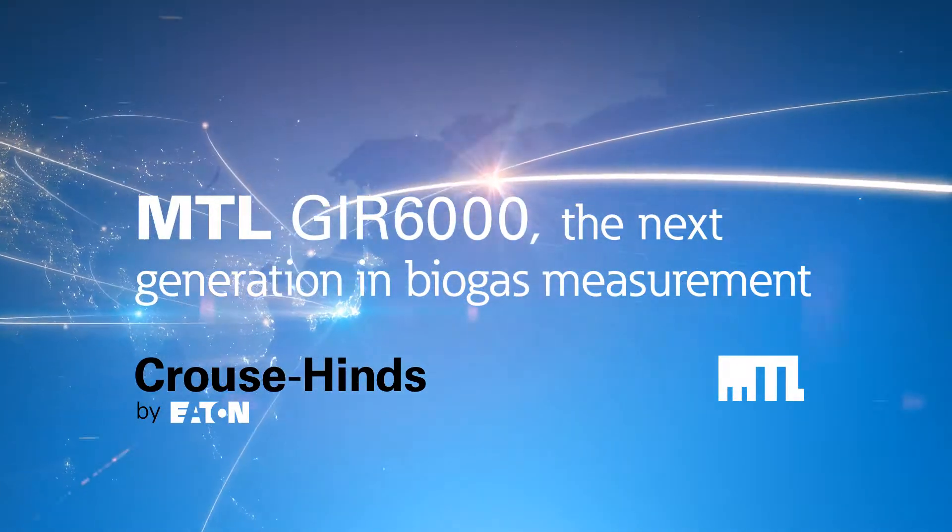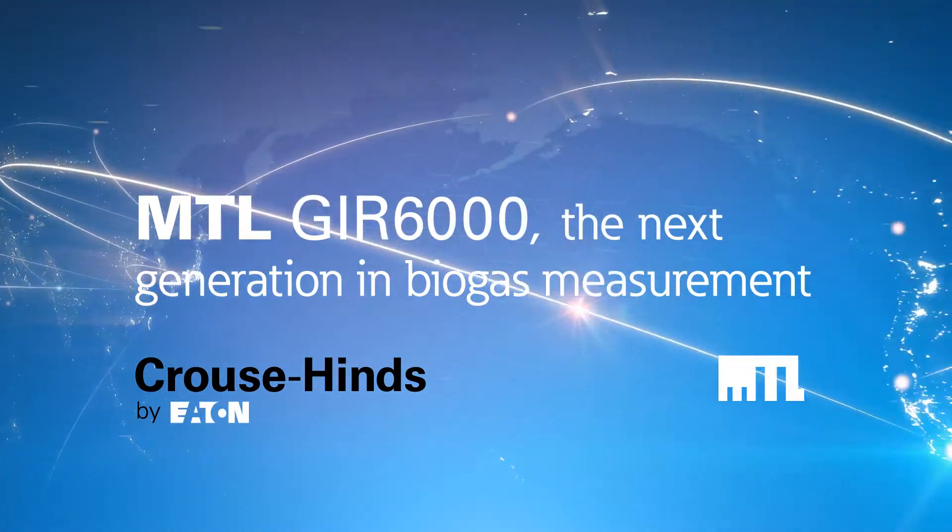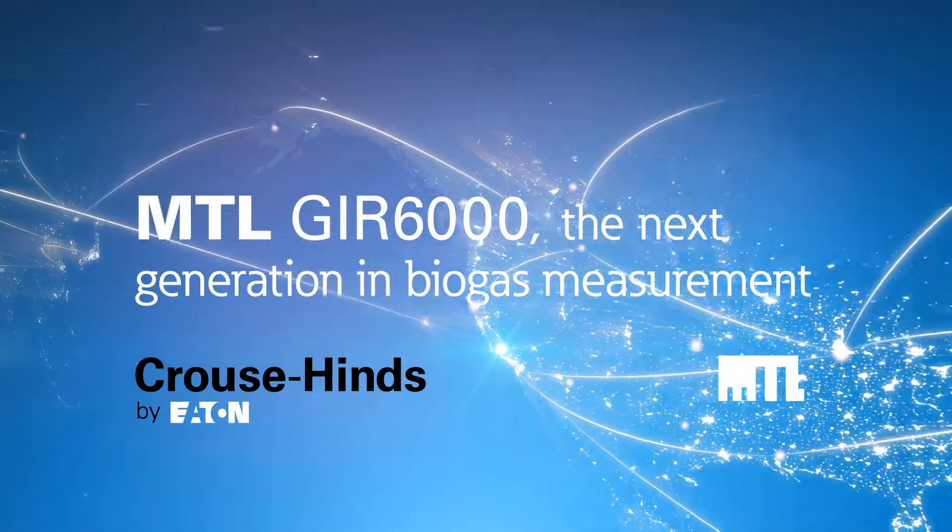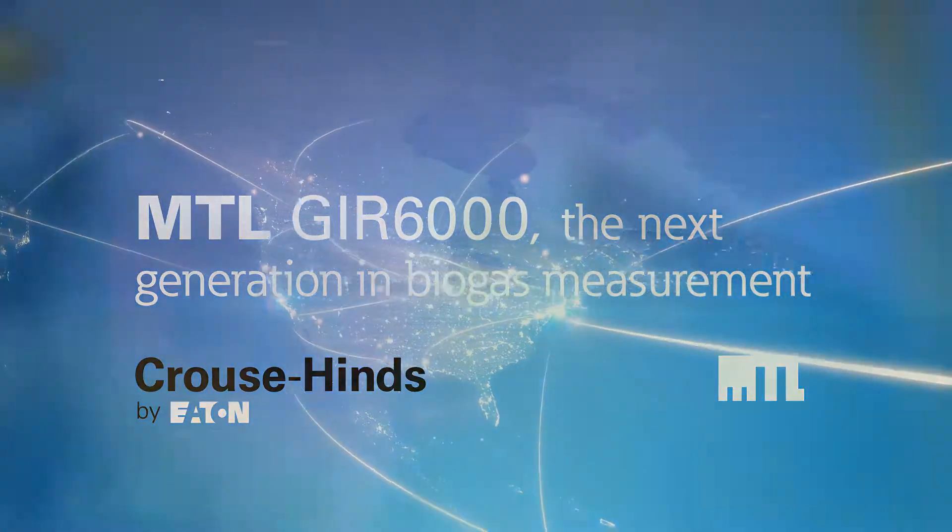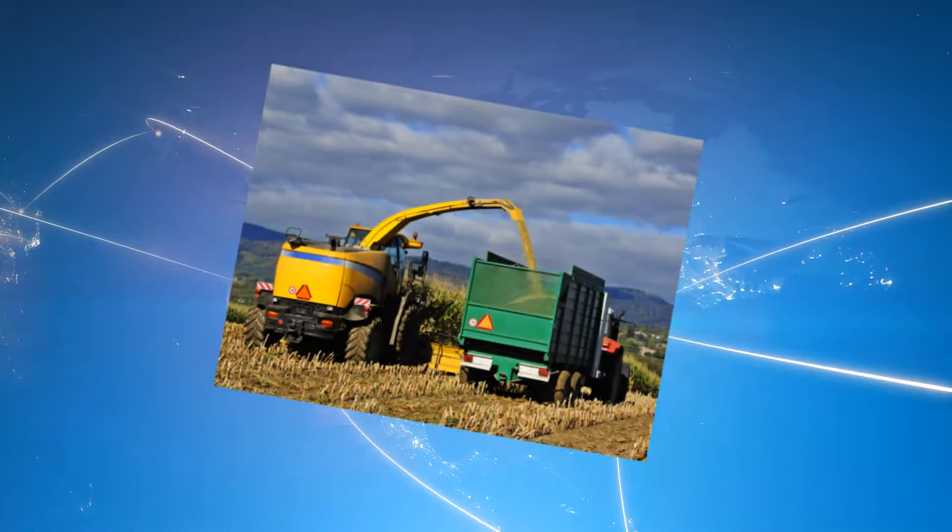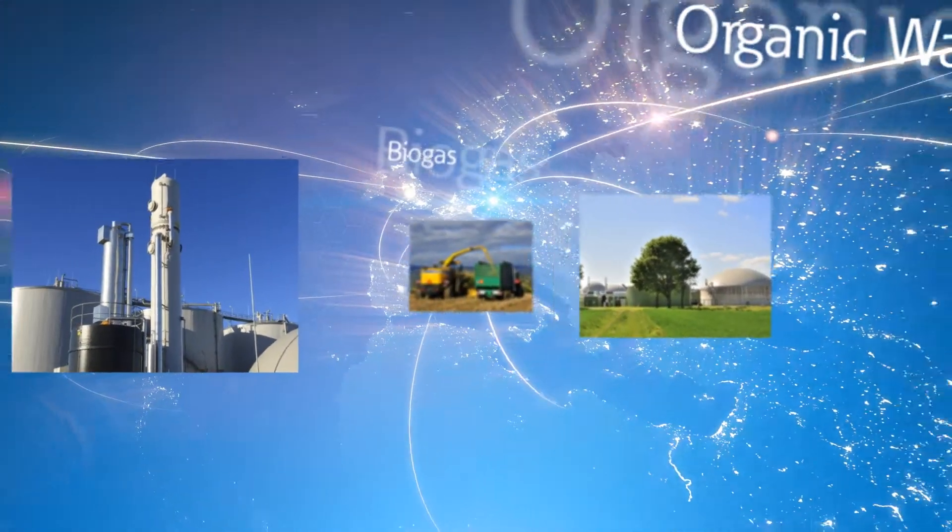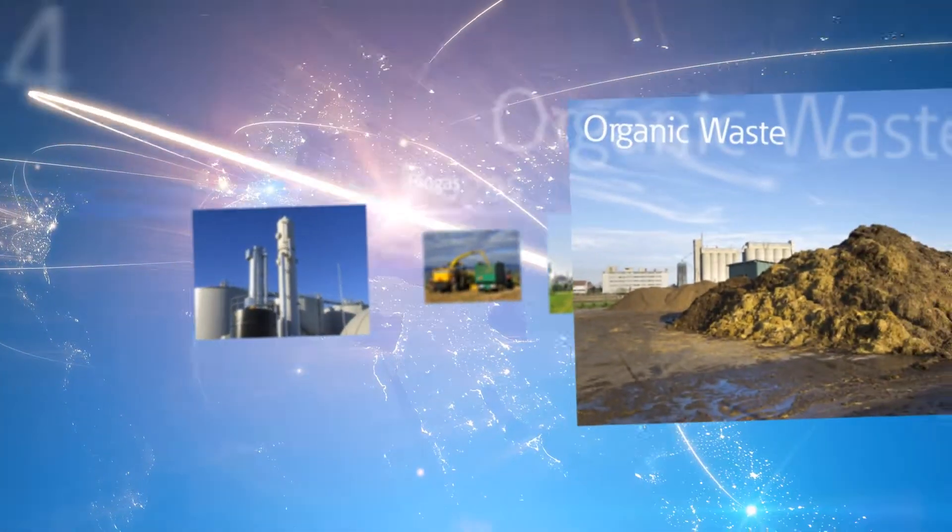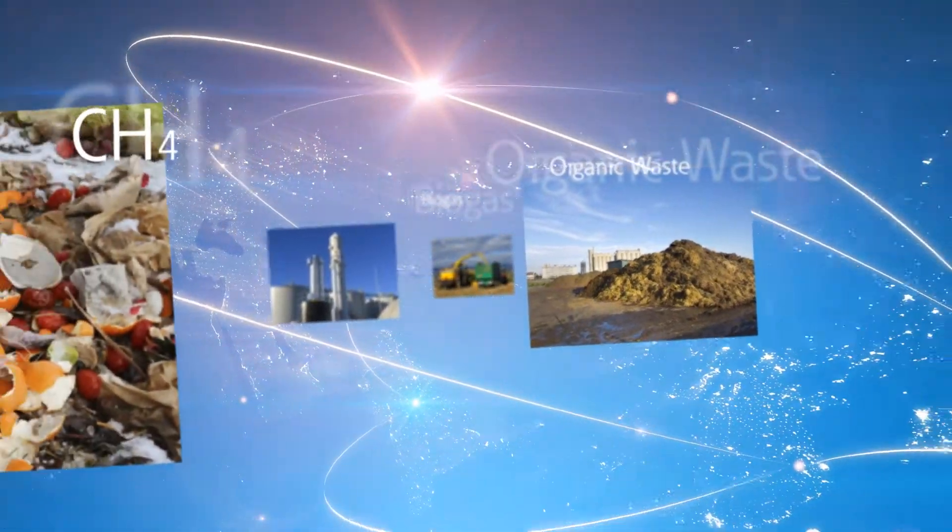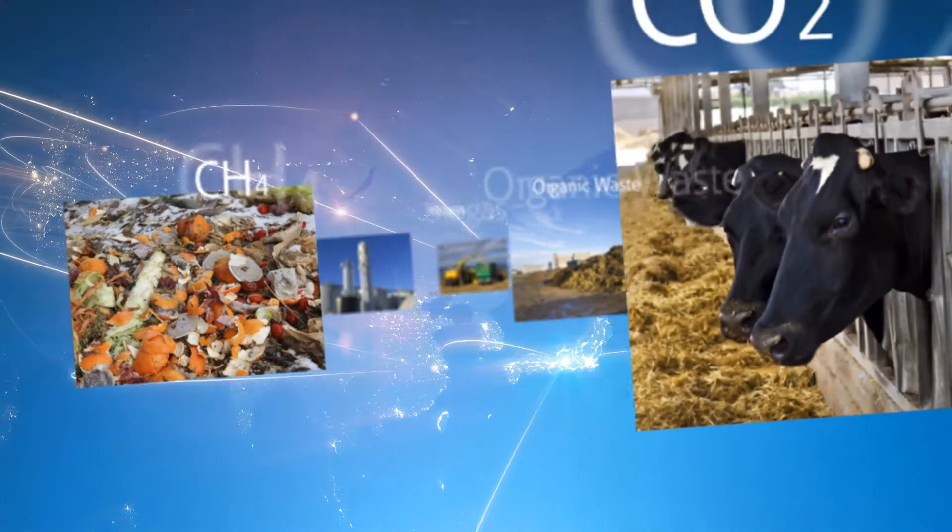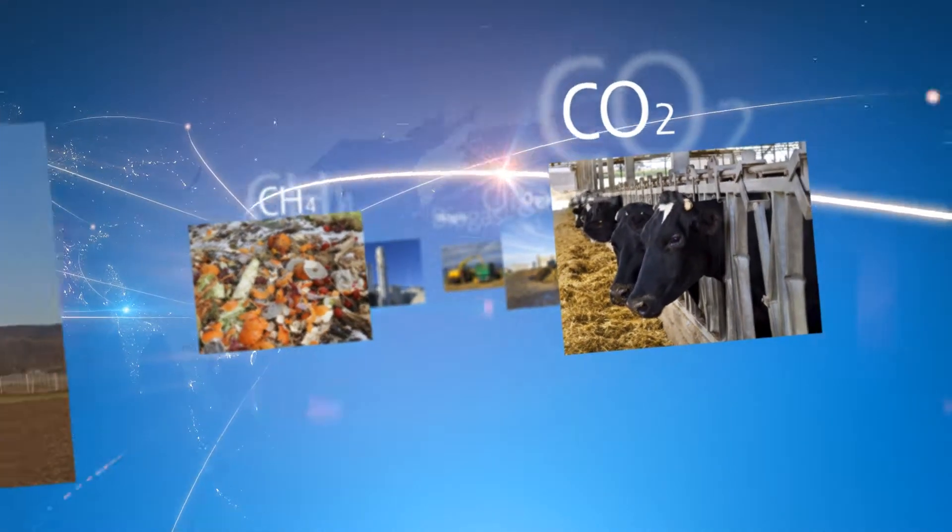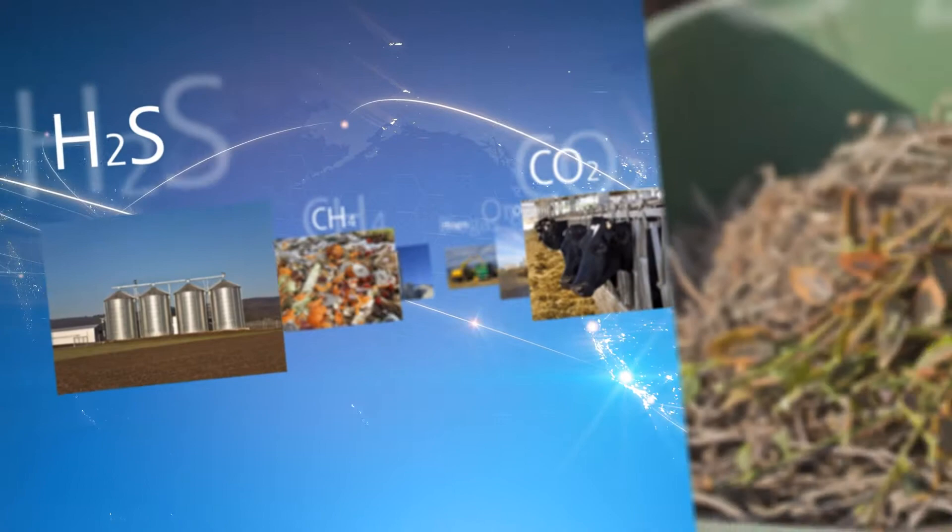The next generation MTL GIR 6000 biogas analyzer has been developed specifically for the control, monitoring and protection of the biogas process. It is a modular system designed to optimize plant control and productivity. Its flexibility makes installation quick and easy, improves maintainability and reduces life cycle costs.